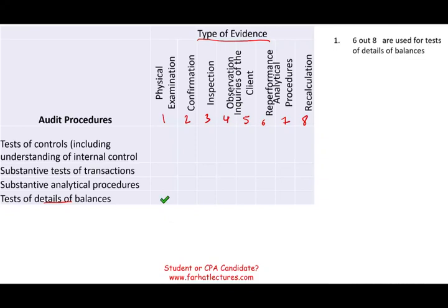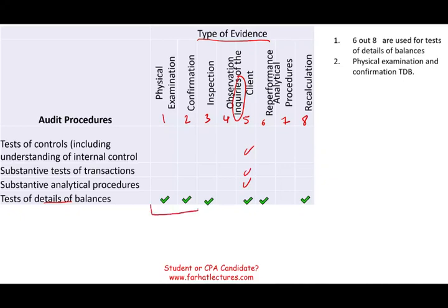For test of detail balances, you could have physical examination — for example, examining inventory — confirmation like for accounts receivable, inspection, inquiries of the client, re-performance, and recalculation. Physical examination and confirmation — numbers one and two — are specific to test of detail balances. Inquiries of the client goes with every test, because you always want to ask questions.